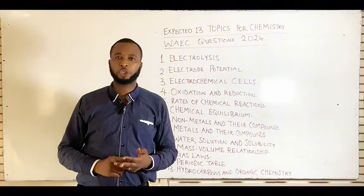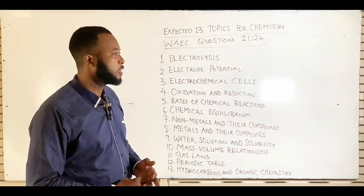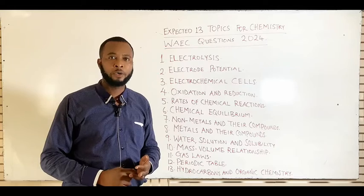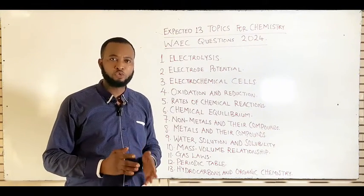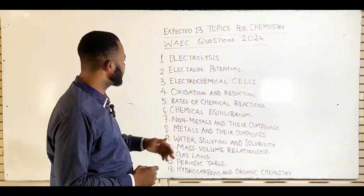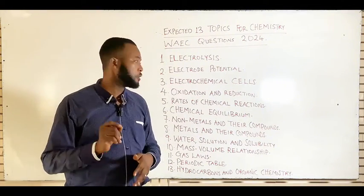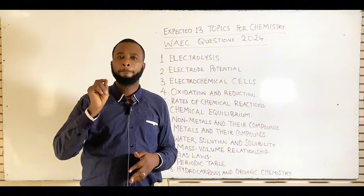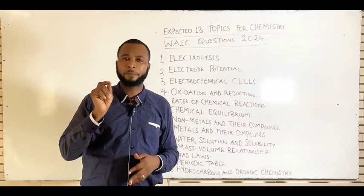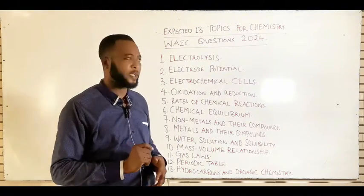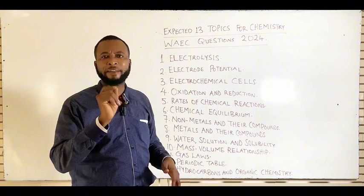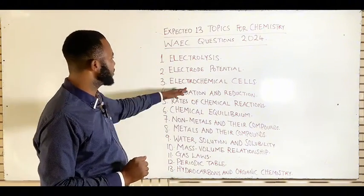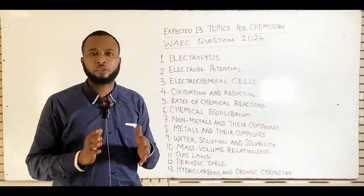The third expected topic is electrochemical cells. Under electrochemical cells you need to know the definition, the types — which are primary cell and secondary cell — and the differences between these two cells. Also know the differences between electrolytic cell and electrochemical cell.